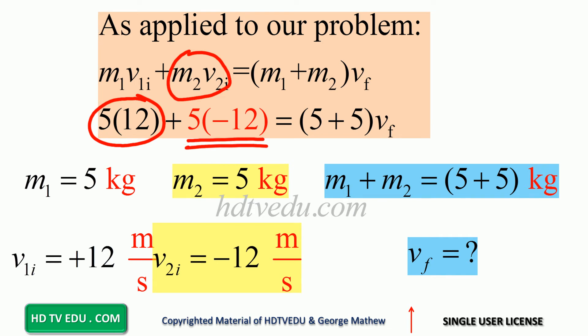It is 5 times negative 12. Why negative 12? It is moving to the left. So 5 kg times negative 12. So you have negative 60 kg meter per second.